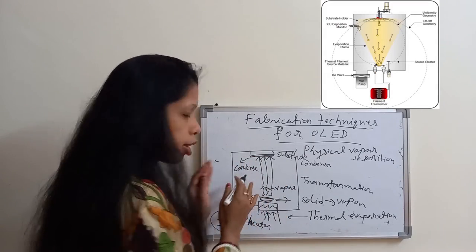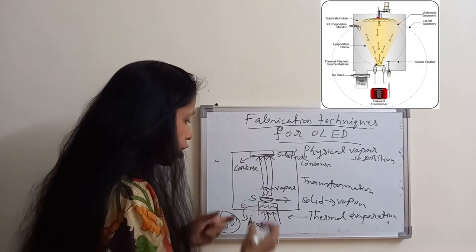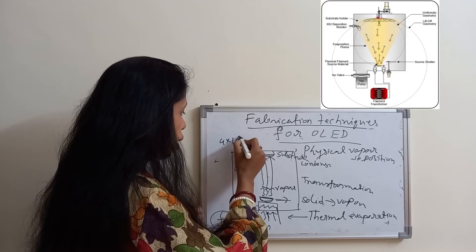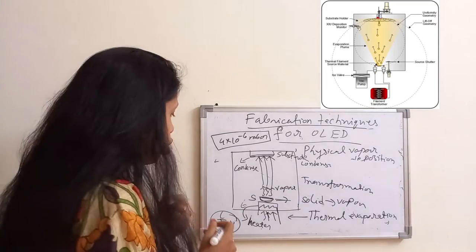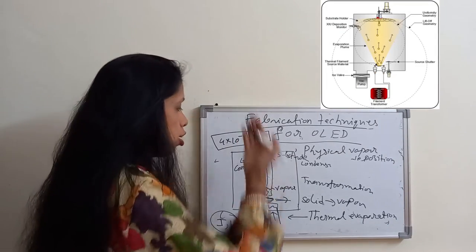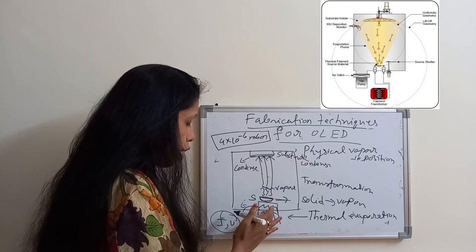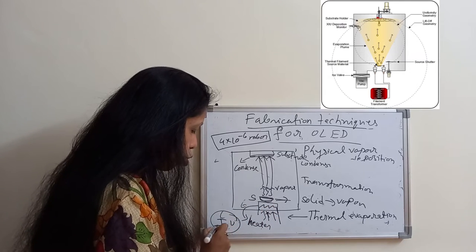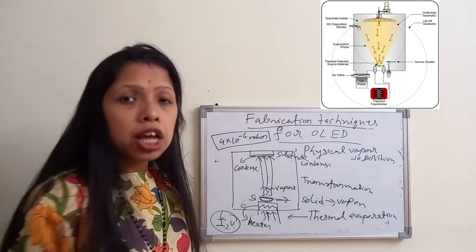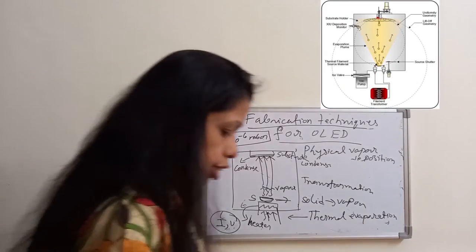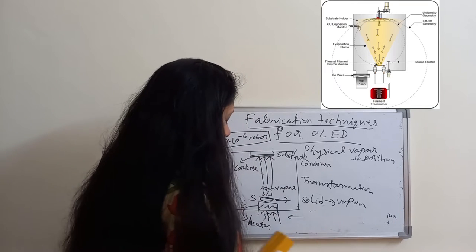In this system there should be no contamination, so we have to evacuate the chamber. The pressure should be maintained at a minimum of 4×10⁻⁶ millibar inside the chamber. Due to this low pressure, the vapor is transferred towards the substrate. In Thermal Evaporation, the heater is warmed up by applying voltage and current, helping the source material convert into vapor.